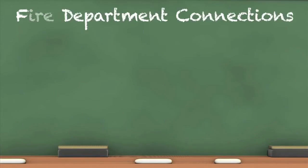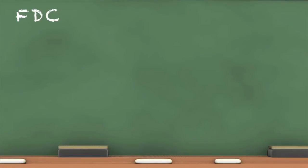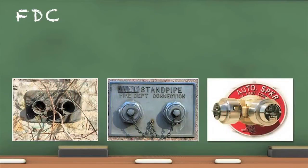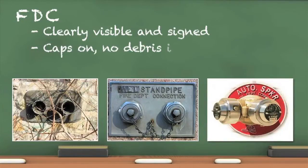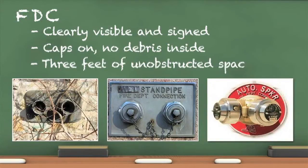Fire department connections (FDCs) are inlets that allow the fire department to connect fire hose to the building and pump in water to boost the water pressure for sprinklers and provide water for firefighting. Signage near the FDC indicating the type of inlet is required. All FDCs must have caps in place and inlets free of debris. A minimum of 3 feet of clear space around FDCs is required, which allows quick access for the fire department. The collar indicating the type of connection must be in place and legible.